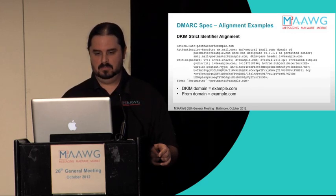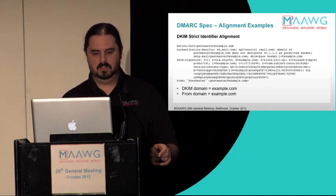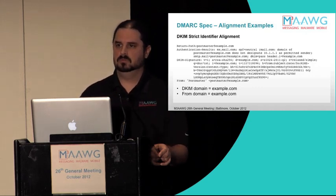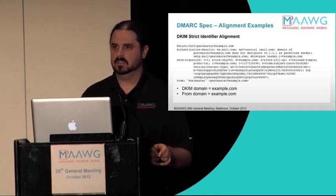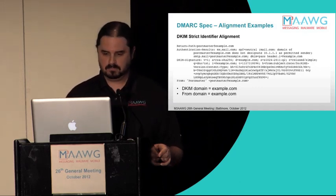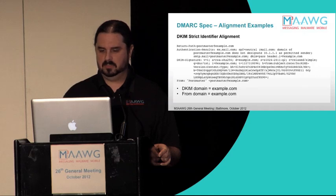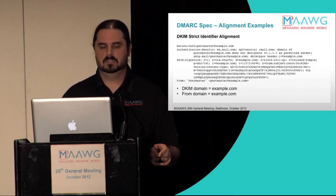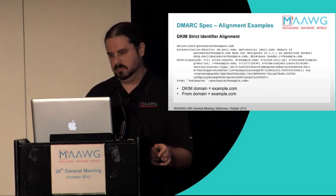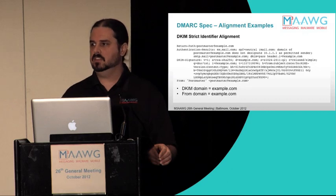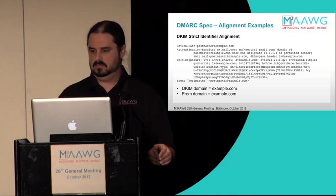This is an example of DKIM strict identifier alignment. In this example, the authentication results show the SPF result is neutral, possibly because this email was automatically forwarded from one service to another. The D= domain is example.com, and DKIM passed. Therefore, DKIM provides example.com as an authenticated identifier, and the From domain is also example.com. They match exactly, so they are in strict alignment.